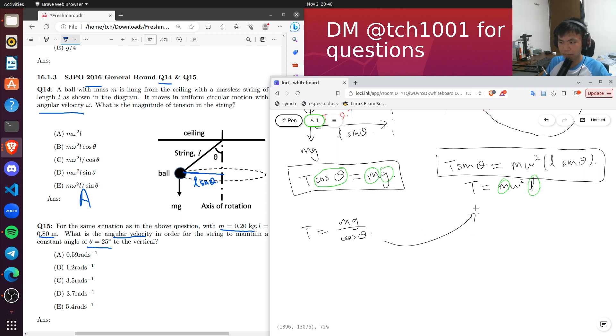And substituting this in, we have that mg over cosine theta equals to m omega squared l. And rearranging it, we have that omega equals to square root of g over l cosine theta.